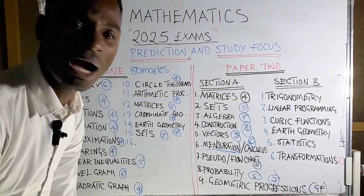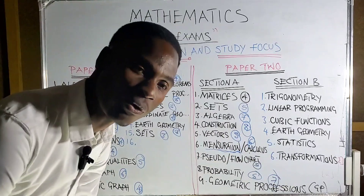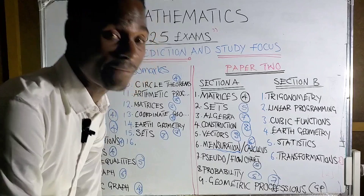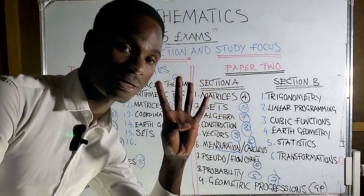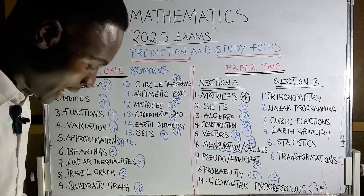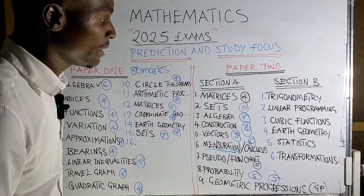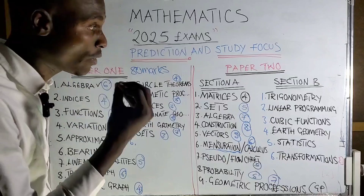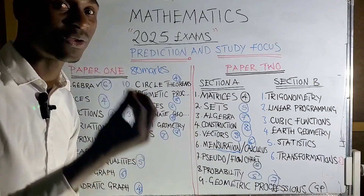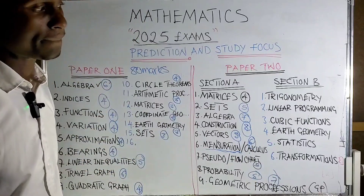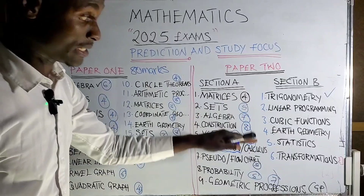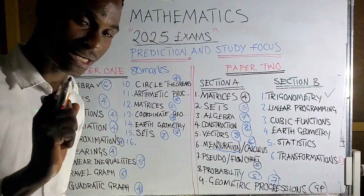Now for section B — this is where you choose questions. You don't have to answer all the questions. Each question in section B is 12 marks, and you only need to answer four questions of your choice. My advice is always choose questions you can solve quickly without spending a lot of time calculating.